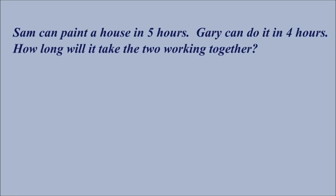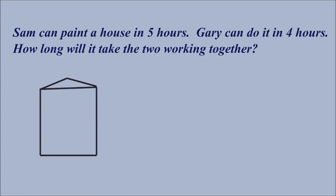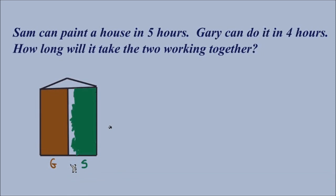Let's break this problem down to get a sense of what the answer will be. We'll use a diagram of a house and consider splitting it in half — Sam does one half and Gary does the other. Gary works quicker, so Gary will finish his half first. If he can do the entire house in four hours, he'll finish his half in two hours. But Sam takes five hours total, so she needs two and a half hours to finish her half.